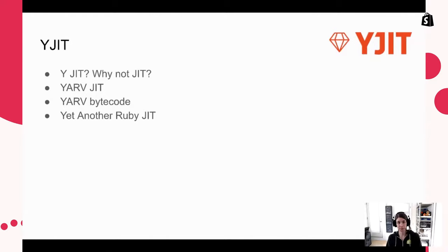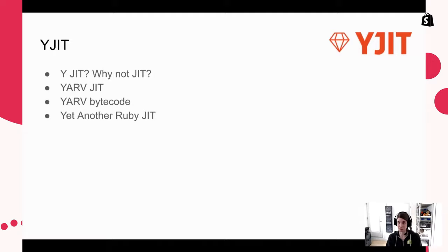YJIT — why not JIT? The name stands for YARF JIT because it compiles YARF bytecode to machine code, or 'Yet Another Ruby JIT' because we're obviously not the first project to build a just-in-time compiler for Ruby. YJIT is a project built by Shopify, but fully open source, and it was just recently upstreamed into CRuby, so it's going to be officially part of the CRuby binary as of version 3.1.